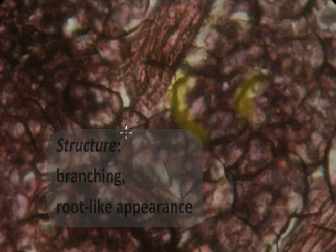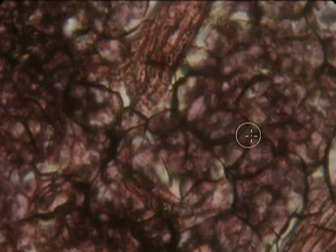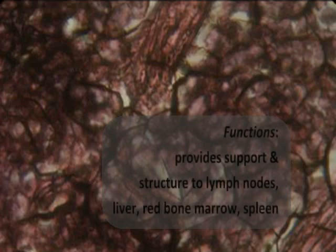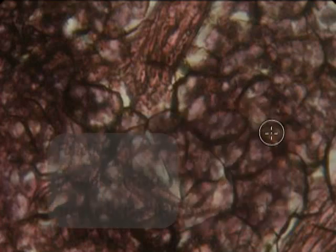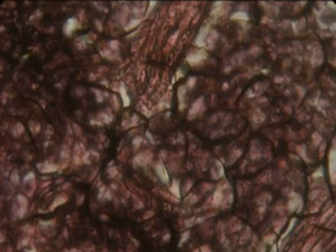Our final loose connective tissue is reticular connective tissue, and the search image here is roots — almost as if you're looking at soil and plant roots under the microscope. 'Reticular' means branching, and these dark black or brown fibers provide tremendous support and structure to organs like the lymph nodes. It's also found in the liver, red bone marrow, and spleen, providing a lot of surface area to hold blood cells and white blood cells in those organs, helping to purify and filter tissue fluid as it passes through.